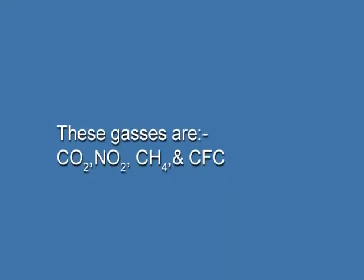The greenhouse gases absorb the long wave infrared radiations. These gases are carbon dioxide, nitrogen peroxide, methane, and chlorofluorocarbon. They make a blanket over the earth which controls the escape of heat from the earth's surface to outer space, so that the earth can be maintained warm and hospitable. That phenomenon is referred to as the greenhouse effect.